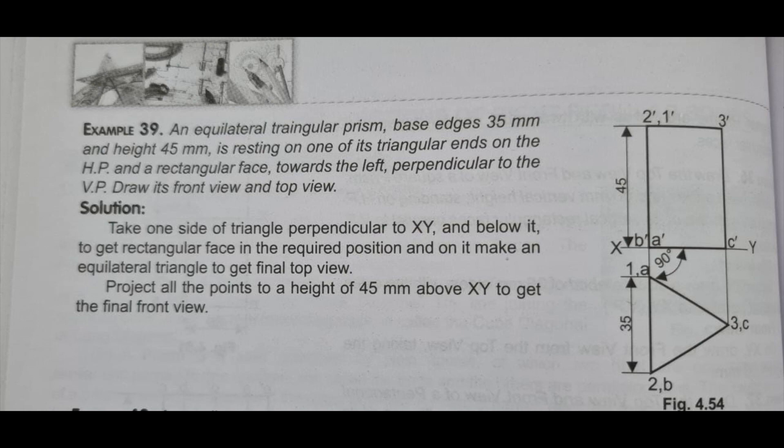Fifth sum: an equilateral triangular prism of base edges 35mm and height 45mm is resting on one of its triangular ends on the HP — that means on the base — and a rectangular face towards the left. That means that rectangular face is towards the left and it is perpendicular to VP. We'll draw HP VP first.